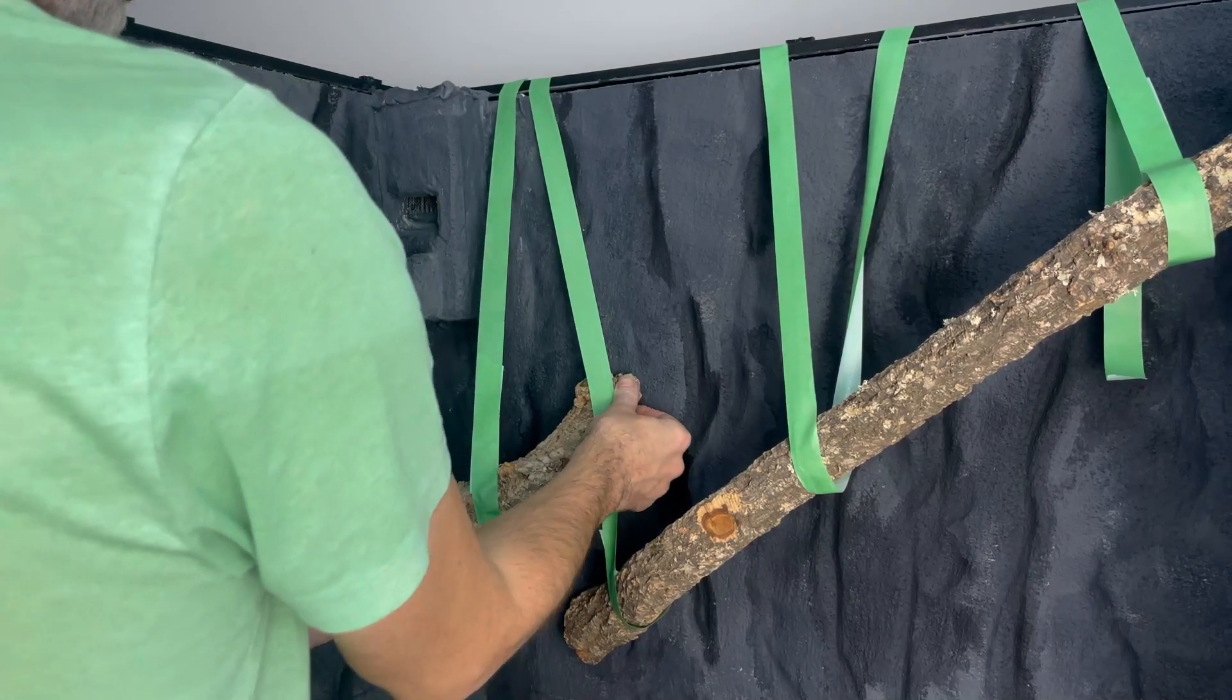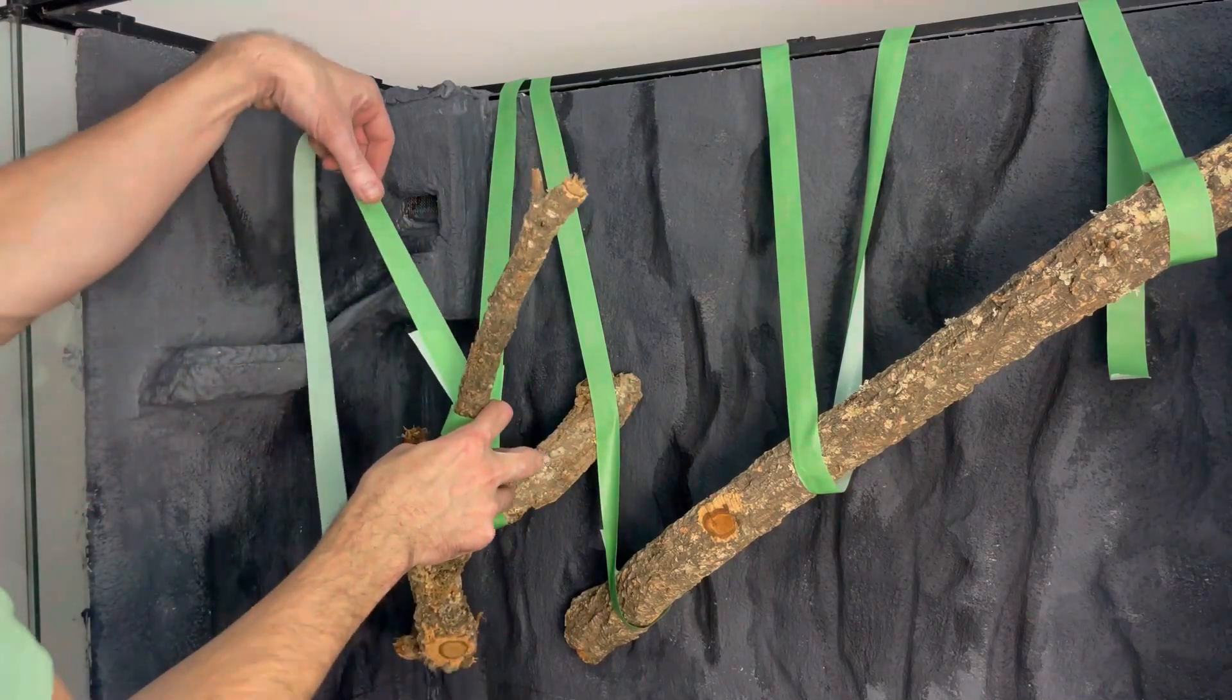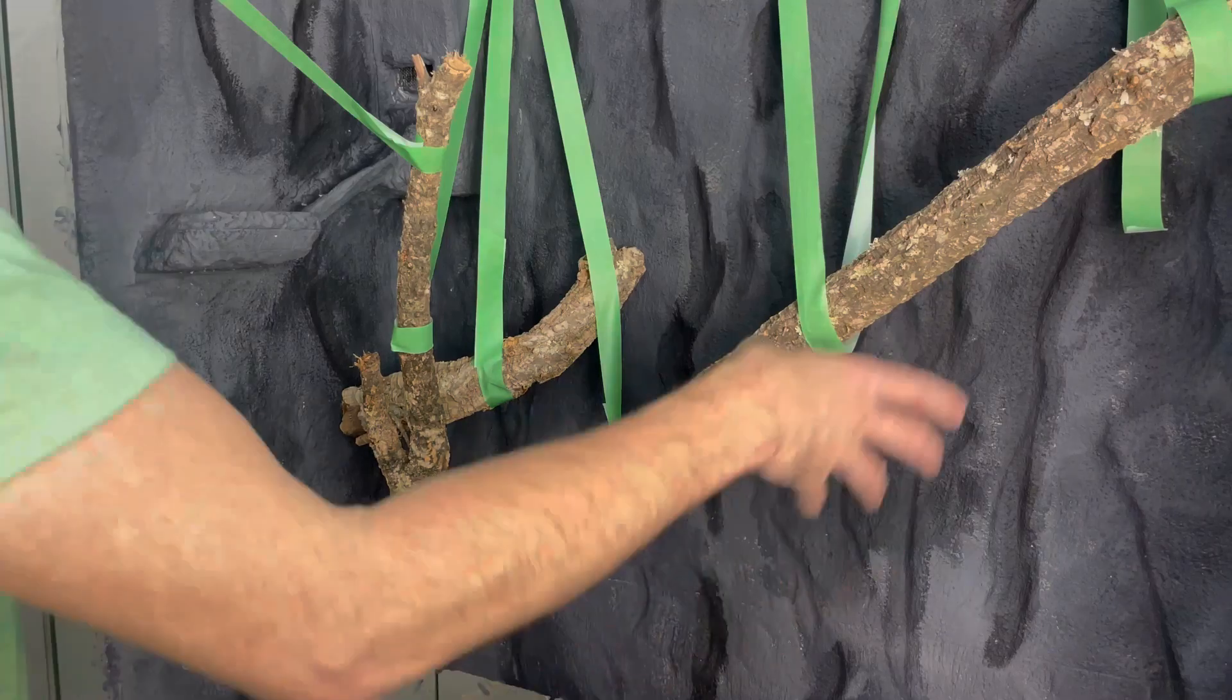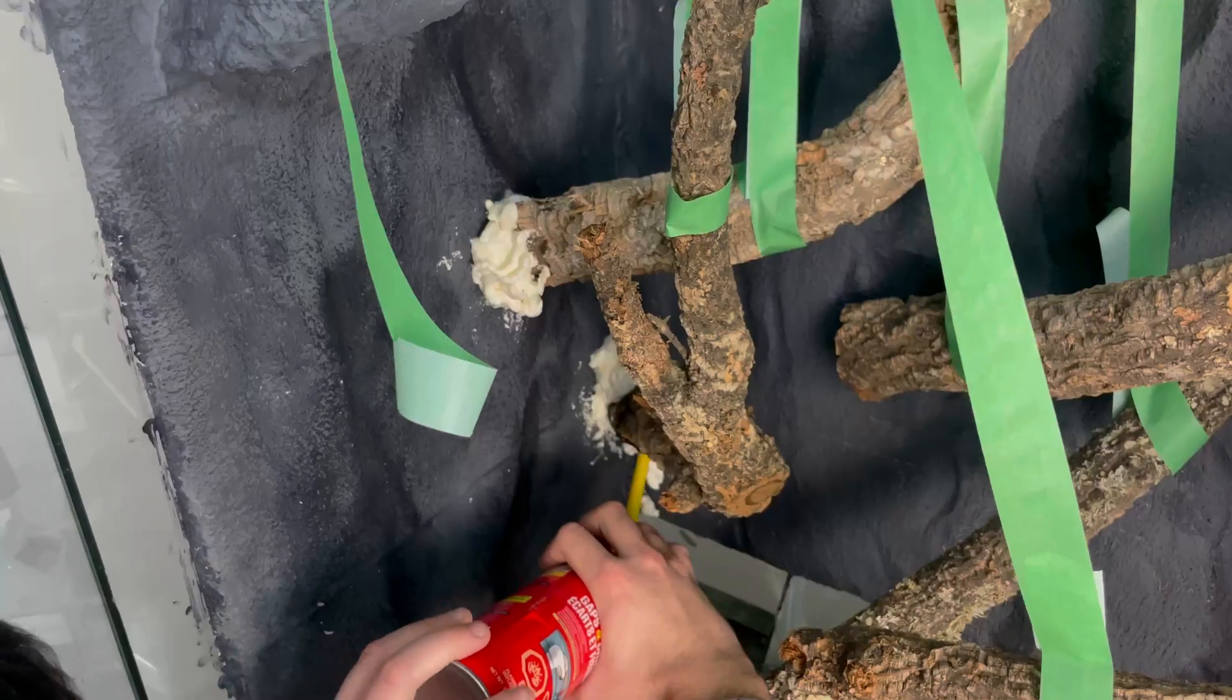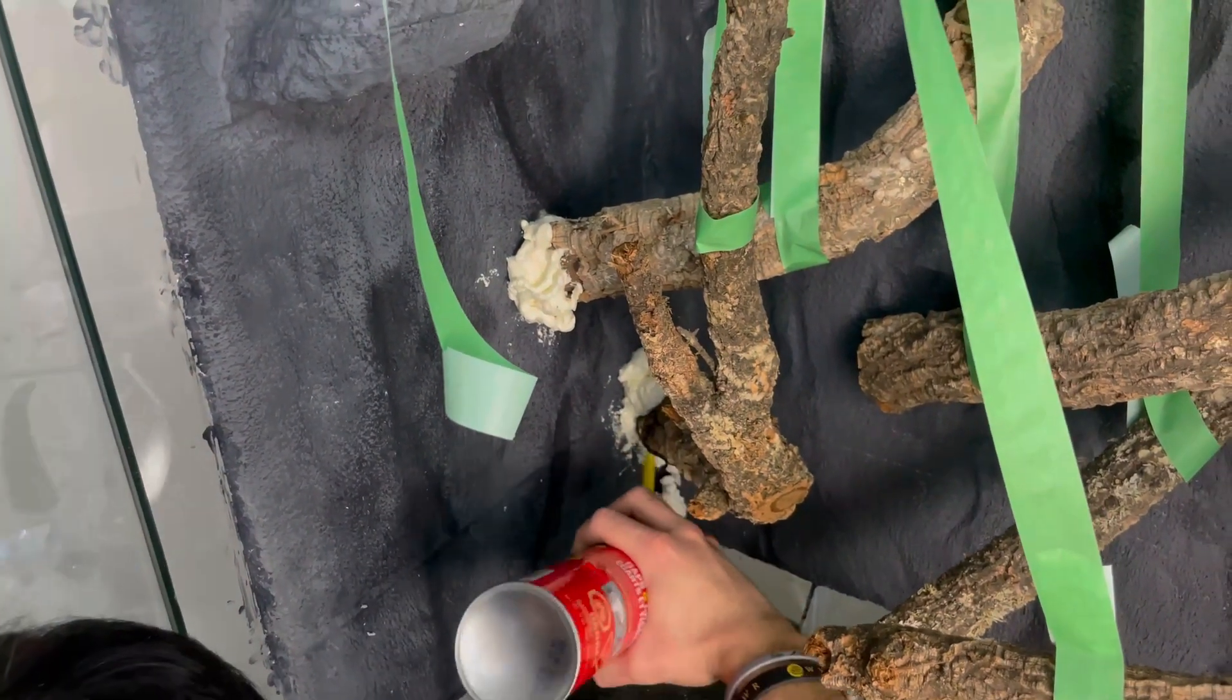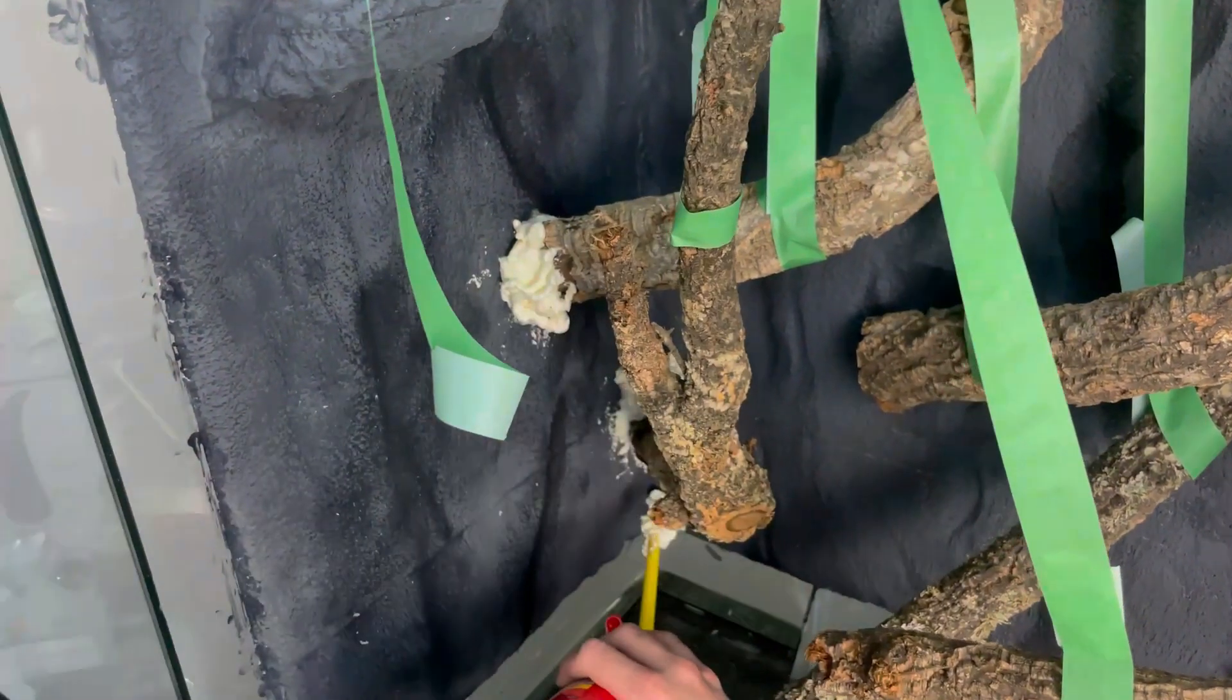We decided how we wanted to place the cork branches and then foamed them in place using expanding foam. We then used painters tape to hold them in place.